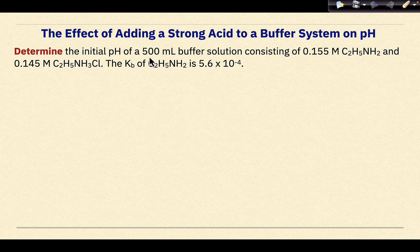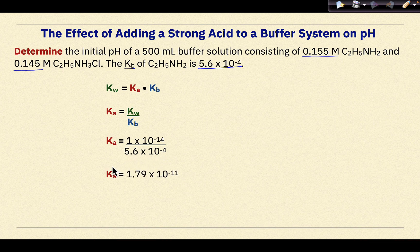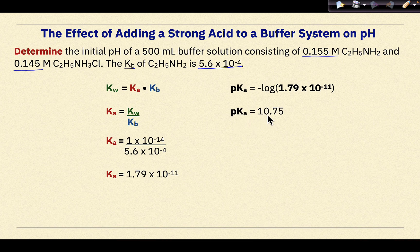Let's look at another example. Determine the initial pH of a 500 milliliter buffer solution consisting of 0.155 molar C2H5NH2. The Kb of C2H5NH2 is 5.6 times 10 to the negative 4. First, we calculate Ka by rearranging the formula: Ka equals Kw divided by Kb, where Kw is 1 times 10 to the negative 14. The Ka value is 1.79 times 10 to the negative 11, and the pKa value is 10.75.